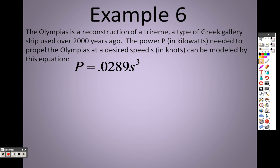Basically, very simple equation. The s deals with the speed, and P is dealing with kilowatts.